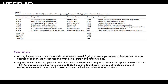In conclusion, among the various carbon sources and concentrations tested, 5 g/L glucose supplementation of wastewater was the optimized condition that yielded higher biomass, lipid, protein, and carbohydrate. Algal cultivation under the optimized condition removes 65.3% of total nitrogen, 71.2% total phosphate, and 96.9% COD. 41.4% carbohydrate, 36.03% protein, and 19.29% crude lipid were obtained, containing fatty acids like oleic, stearic, and eicosadienoic acid, demonstrating potential human, animal, and agricultural applications.